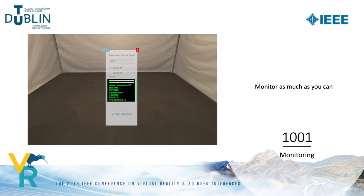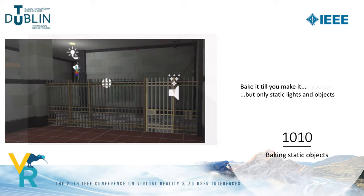Parameters that are important to monitor may be displayed through a UI available to the experimenter, which is something I would recommend. Dynamic lights and shadows are computationally expensive but are not necessary for static objects — this can be baked in advance.